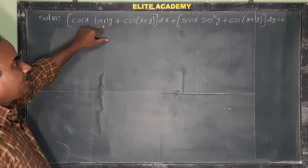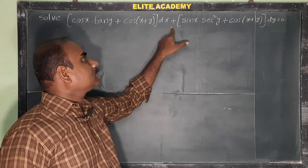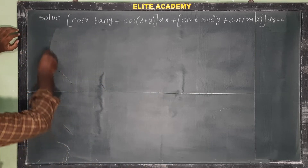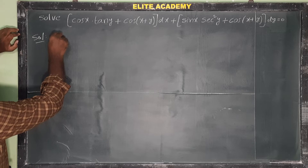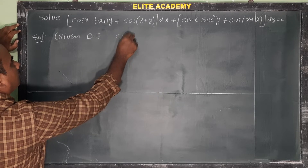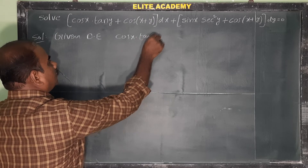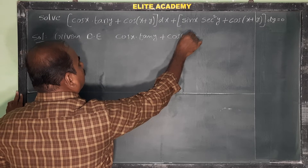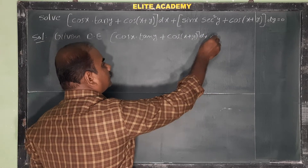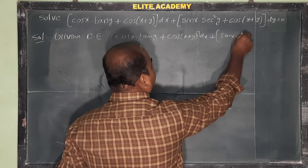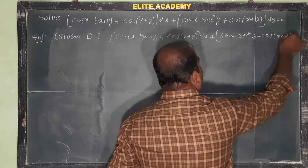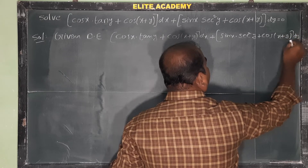Solve cos(x)·(tan(y) + cos(x+y)) dx + sin(x)·(sec²(y) + cos(x+y)) dy = 0. Let us see the solution. Write the given differential equation: cos(x)·(tan(y) + cos(x+y)) dx + sin(x)·(sec²(y) + cos(x+y)) dy = 0.